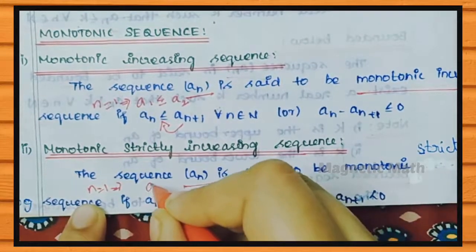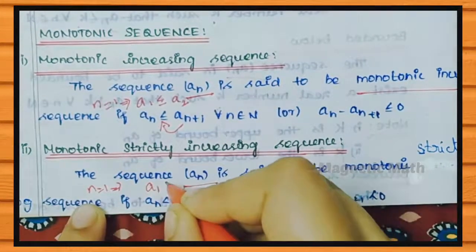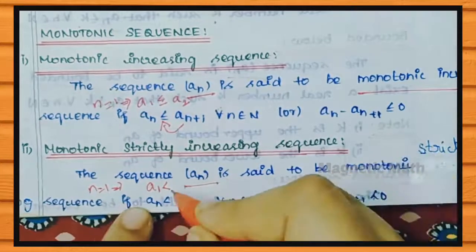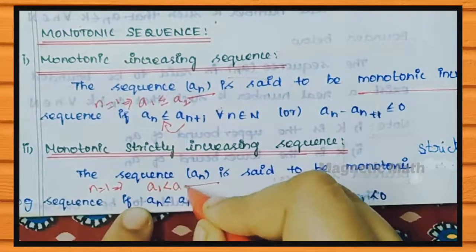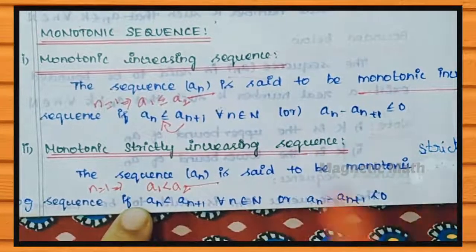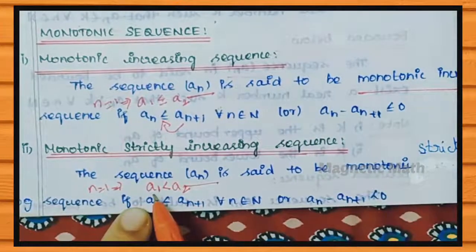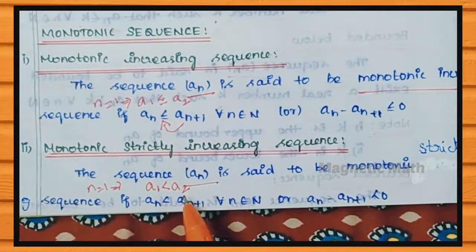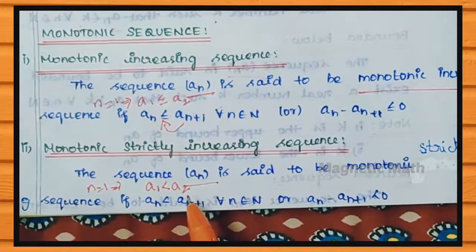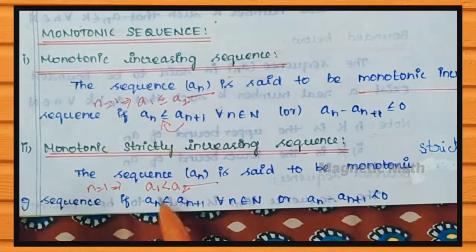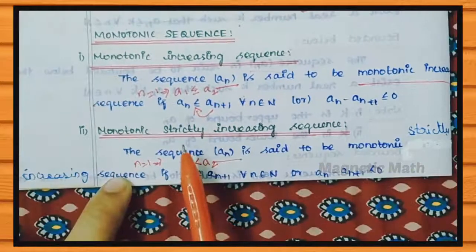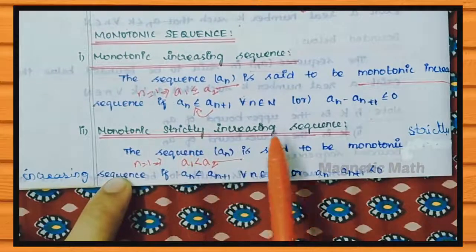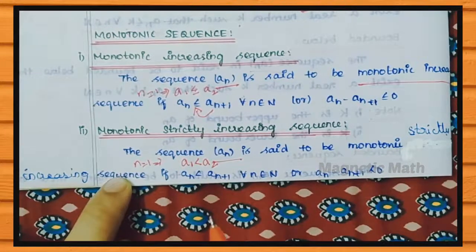So for Strictly Increasing Sequence, A1 is less than A2, and in sequence rule the first term is strictly less than the second term. This defines a Strictly Increasing Sequence.